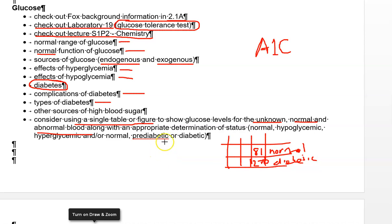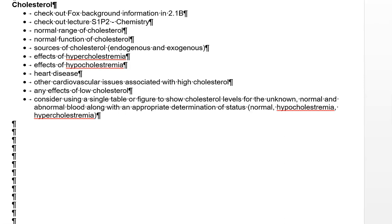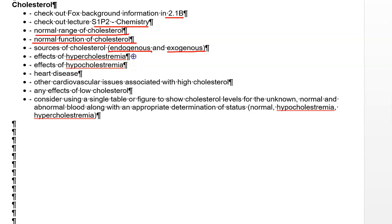Now for cholesterol — Fox 2.1b is where cholesterol is covered, so check that out. Also refer to lecture Section 1 Part 2 chemistry, where we discussed cholesterol as a biomolecule. Start with the normal range for cholesterol from Fox or a cited source. Explain why we normally use cholesterol — it's so important we make it inside our body (endogenous production) and also get it from animal-based foods. Discuss hypercholesterolemia and its effects.